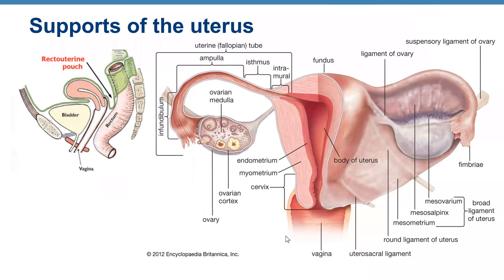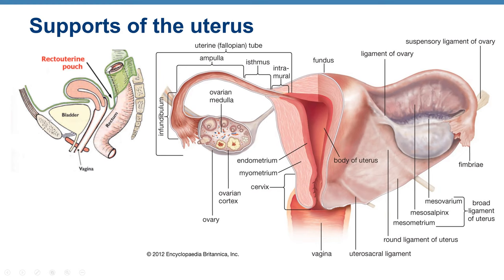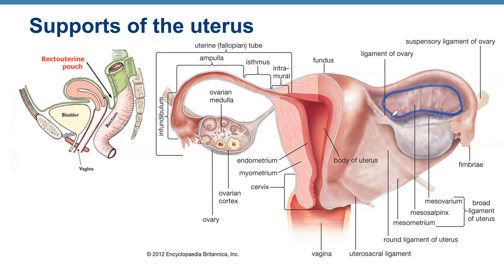The ligaments are folds of peritoneum that cover the uterus, uterine tubes, and ovaries. The broad ligament is made of three parts: mesometrium (supporting the uterus), mesovarium (supporting the ovary), and mesosalpinx (supporting the uterine tubes).